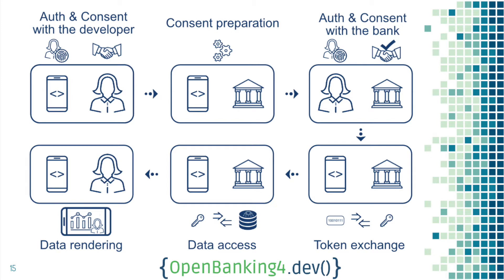Once Alice has consented, the bank issues a token and redirects that token back to the TPP. Because it goes through Alice, there is a step called the token exchange, which makes sure that only the TPP can get the real key. The token is public, but only the TPP with its credentials can convert it to an access token — a real key.